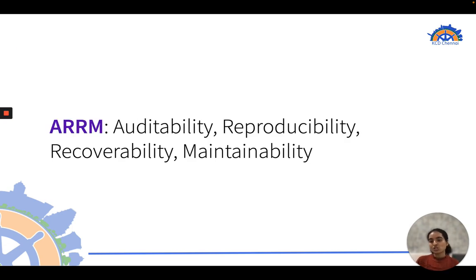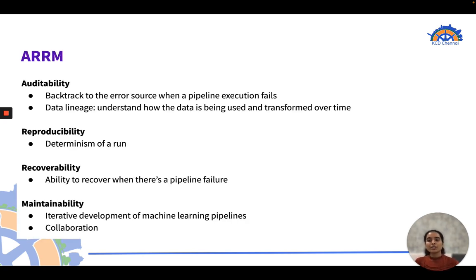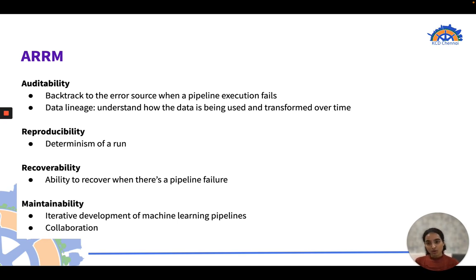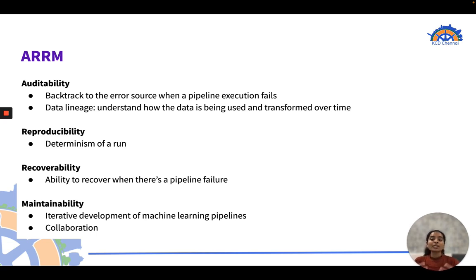In addition to these challenges, we also have to think about ARM: auditability, reproducibility, recoverability, and maintainability. Auditability is the ability to backtrack to the error source when a pipeline fails, including data lineage. Reproducibility is the determinism of a run — can we reproduce it given the same inputs? Recoverability is the ability to recover from pipeline failure, and maintainability is iterative development with team collaboration.